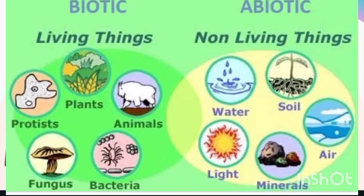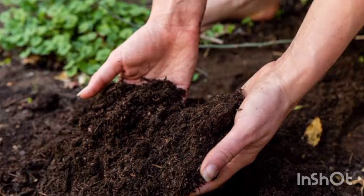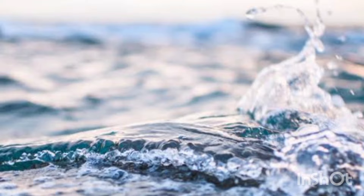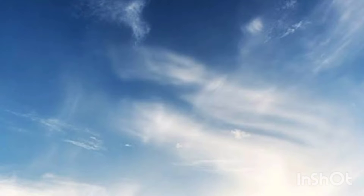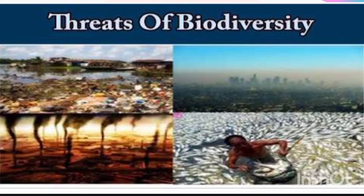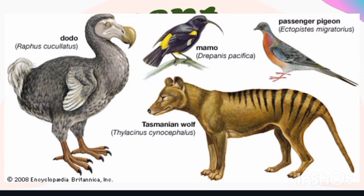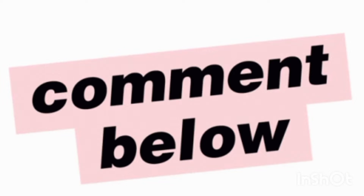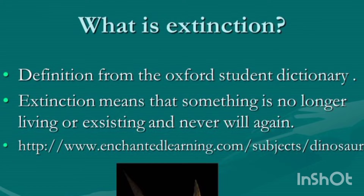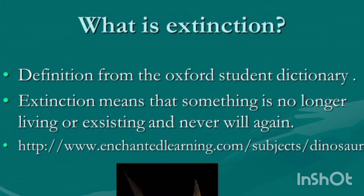Abiotic components are the non-living components — for example, soil, rock, water, and air. As a result, the existence of living things is threatened, and several living things have already become extinct. Do you know any animal that has become extinct? Please comment down below. Extinct means animals that were living on this earth before but are no longer found today.